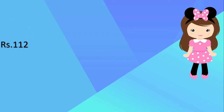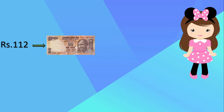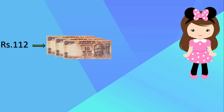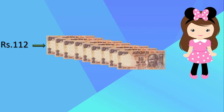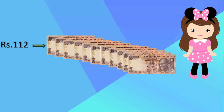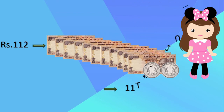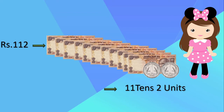The second girl also brought 112 rupees, but in the form of 10-rupee notes. She has 11 ten-rupee notes, which makes 110 rupees, and she also brought 2 one-rupee coins. So we can write this as: 11 tens and 2 units, which is also equal to rupees 112. This is the second form — we have used tens and units.